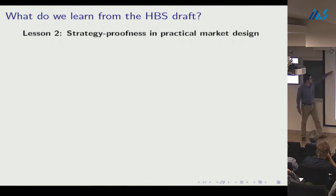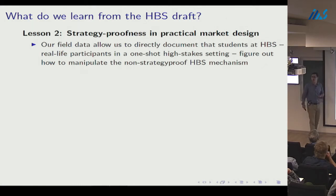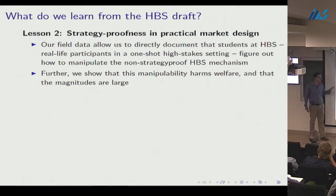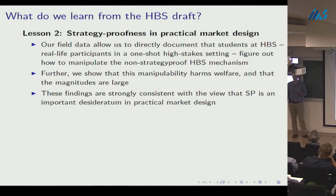The second lesson concerns strategy-proofness and practical market design. Our field data directly document that Harvard Business School students strategically misreport their preferences — real-life participants in a one-shot, high-stakes setting — and this manipulability harms efficiency, causes congestion, and harms welfare. These findings are strongly consistent with the view that strategy-proofness is an important desideratum in practical market design.